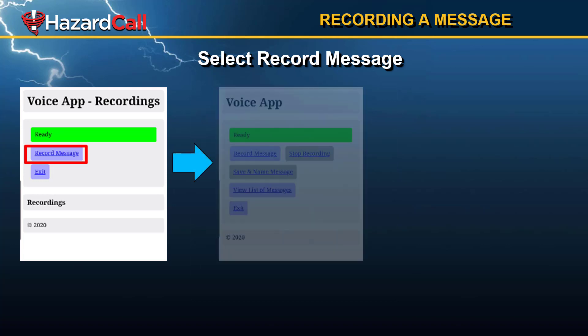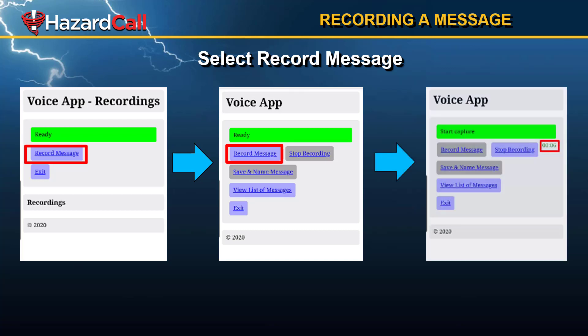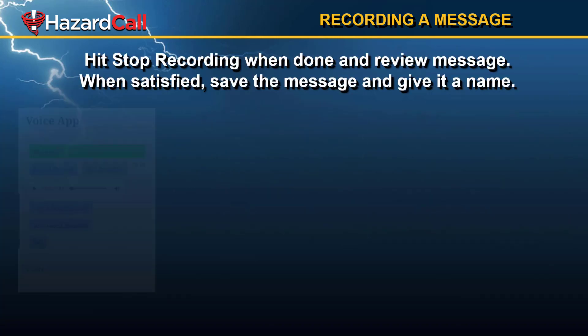Click on Record Message. Some sub-features appear because now you're ready to record. Click on Record Message and you'll be shown how much time you have taken to record your message. When you're finished, hit Stop Recording.